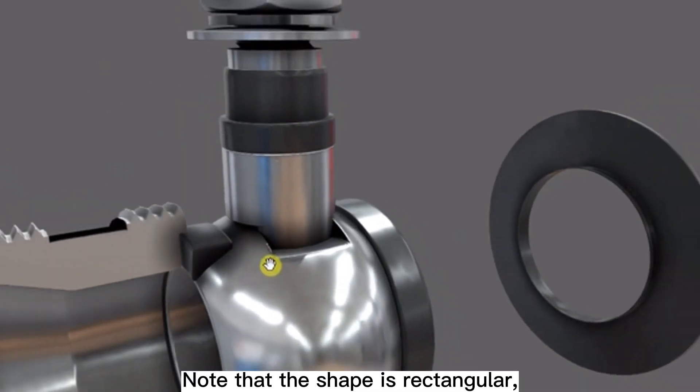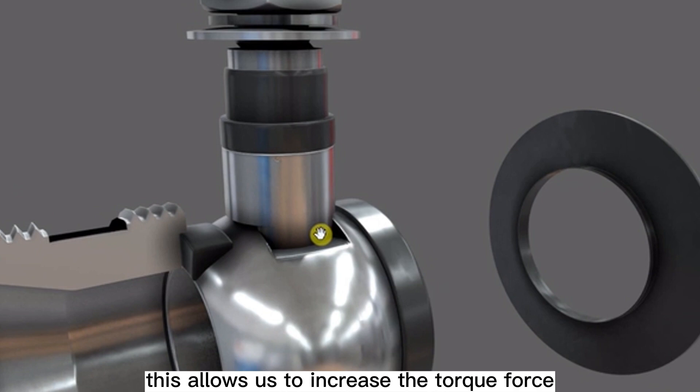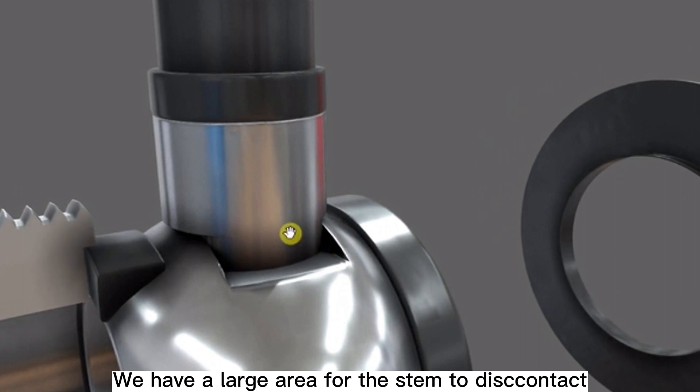Note that the shape is rectangular. This allows us to increase the torque force without distorting the top of the ball valve. We have a large area for the stem to contact, without the risk of rounding the top of the ball.